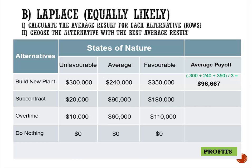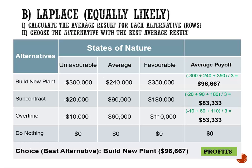For build a new plant, the average works out to 96,667. For subcontract, the average works out to 83,333. For overtime, the average works out to 53,333, and for do nothing the average is zero. These figures represent profits, so we want to choose the highest profit. The highest profit is 96,667, so rational individuals would choose to build a new plant.